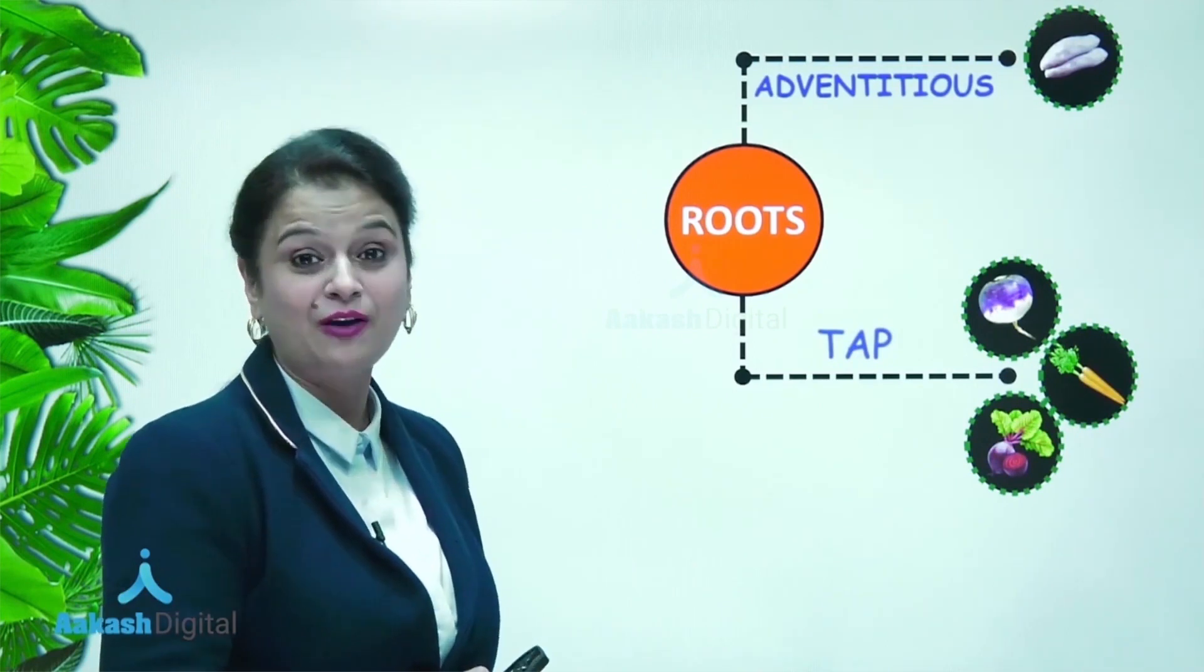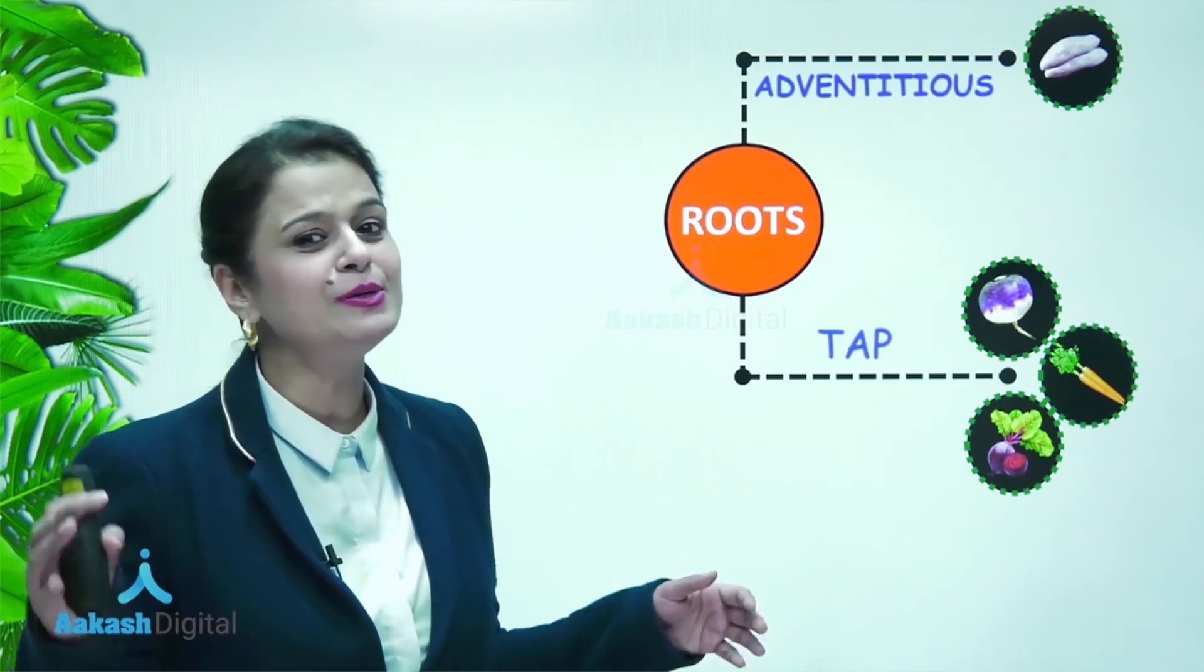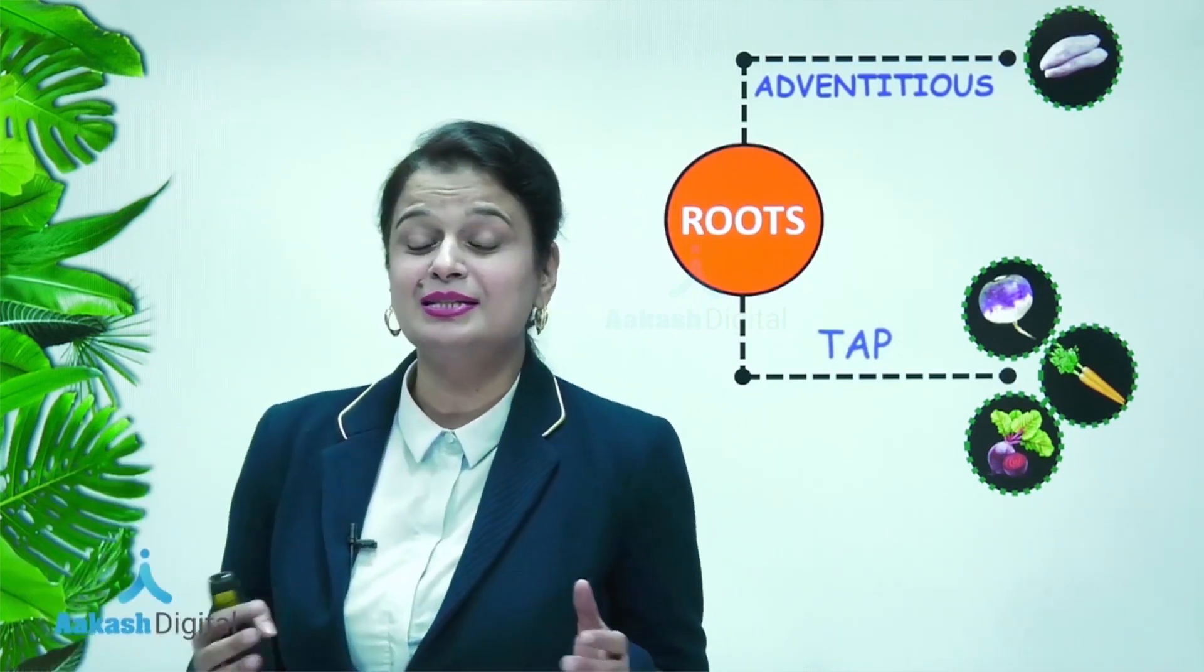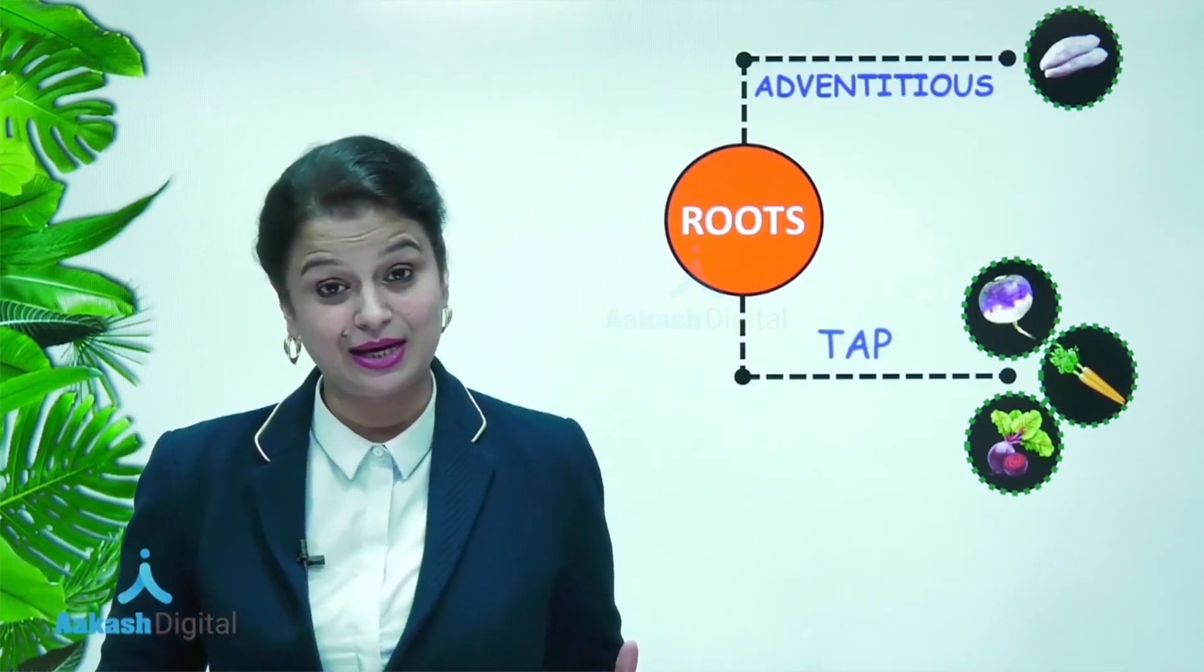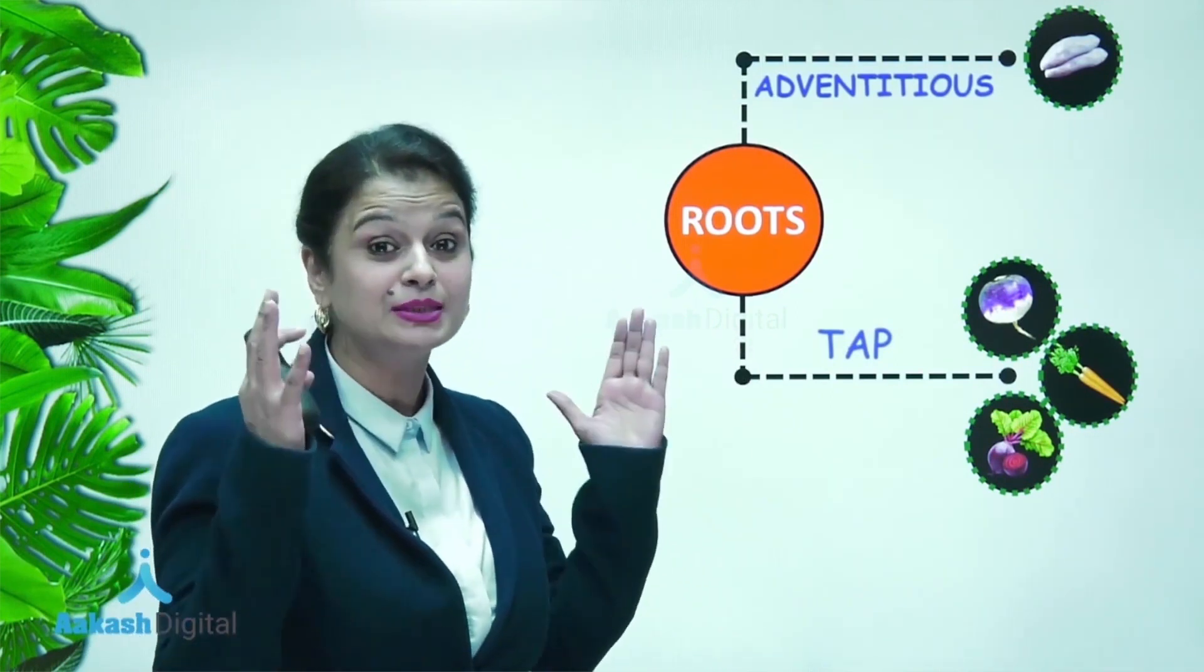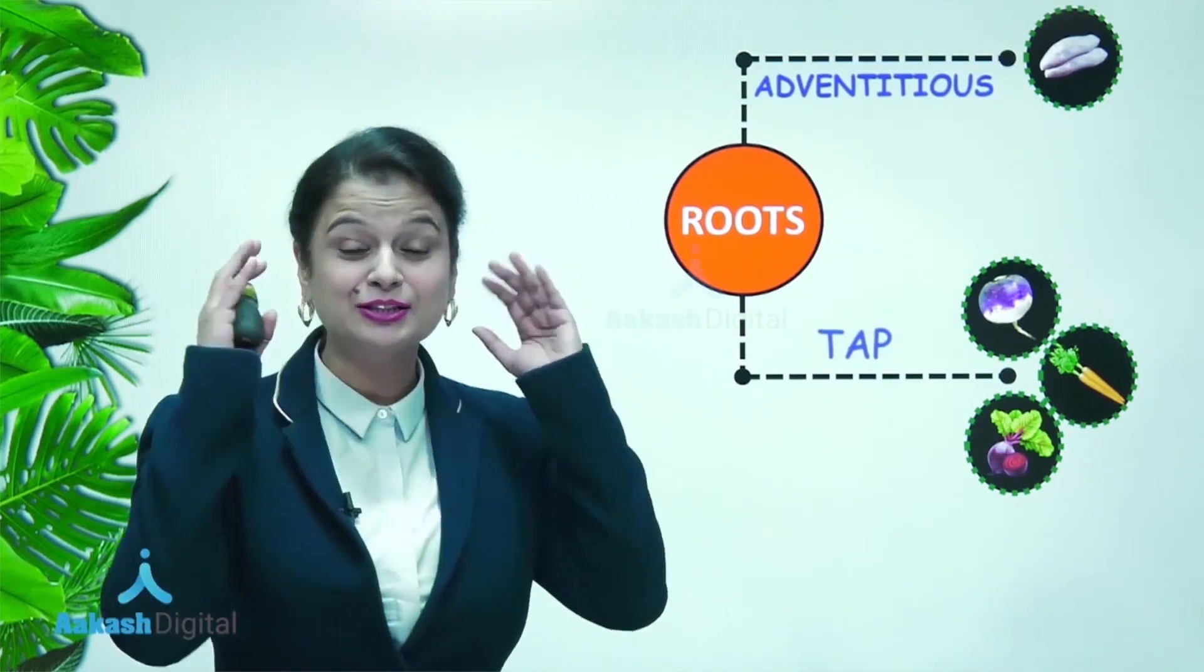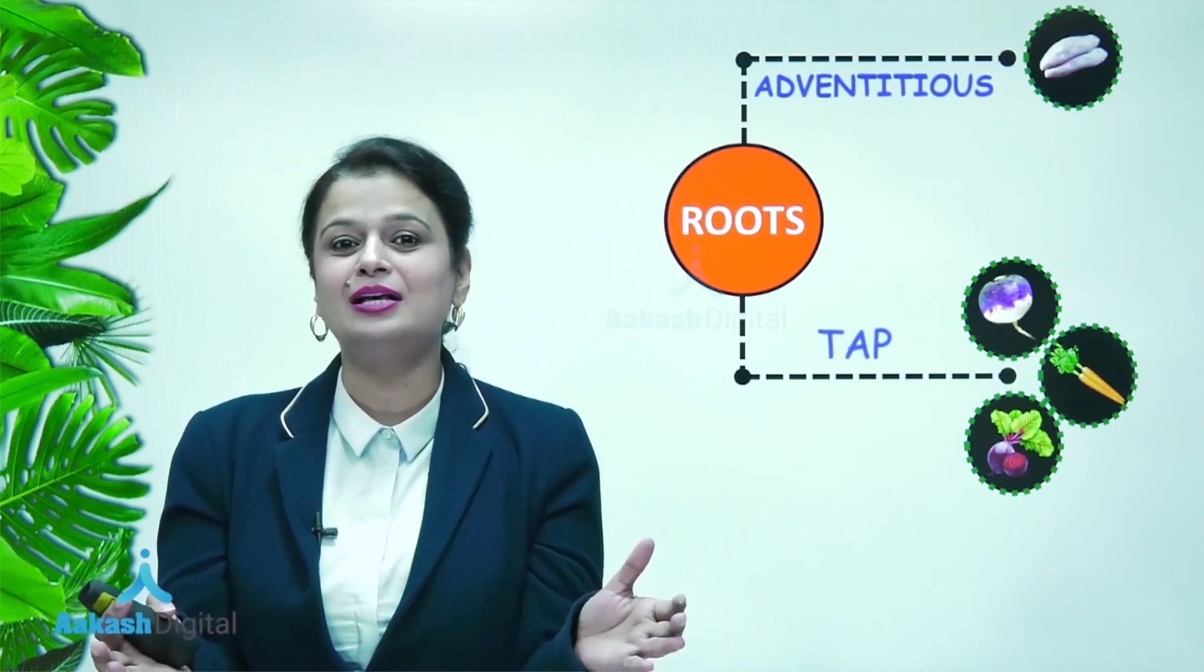Now another question is that amongst these plants, you have to choose the one in which buds are present on the root. You might be knowing this very well that buds are present on the stem. Yes, buds are a characteristic feature of stem, but sometimes buds are also present on the root.